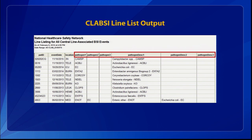Here's our example CLABSI line list output. You can see the red box has six different variables — the first three are the codes in capital letters, and the second three are the full pathogen name. For most of these, pathogen two and three are blank, which just means there was only one pathogen reported for that HAI.